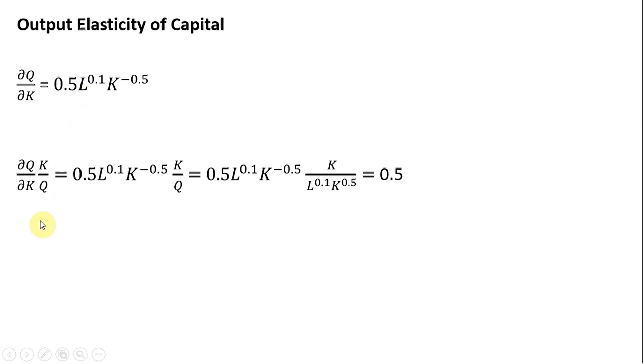Plugging this into our formula: marginal product of capital multiplied by K divided by Q. Once again, for Q, we'll plug in the original production function, and now we will simplify.